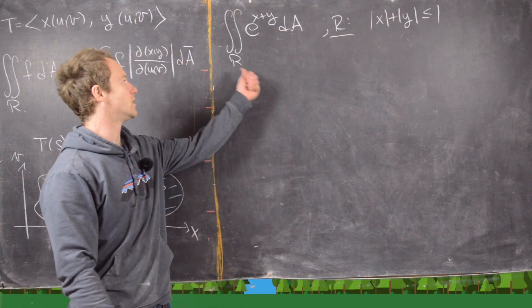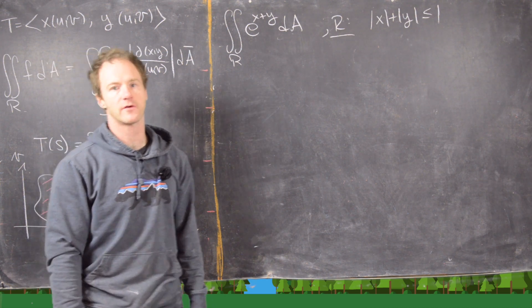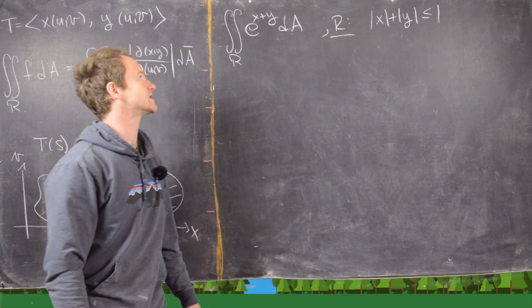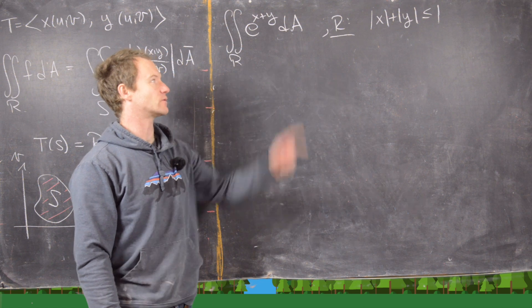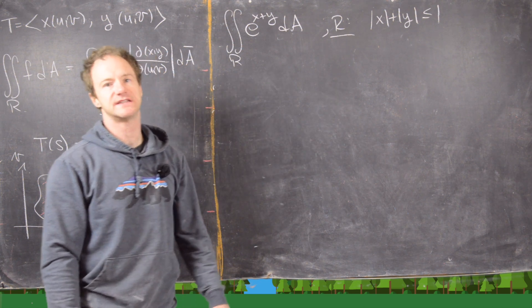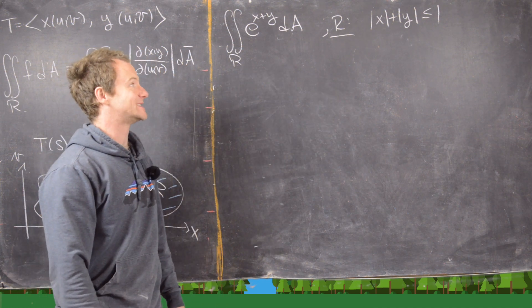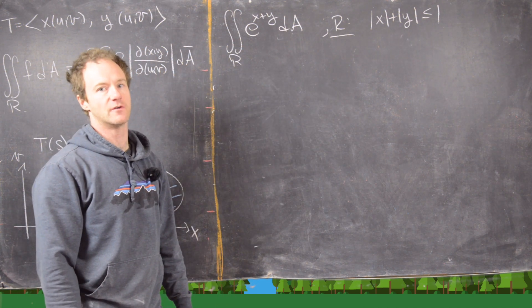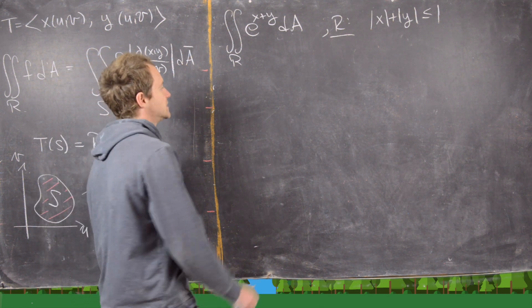For our next example, we'll look at the double integral over the region R of e to the x plus y dA, and R is the region where the absolute value of x plus the absolute value of y is less than or equal to 1.